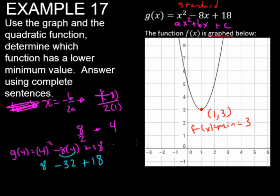I'm sorry, 4 squared is not 8. What was I thinking? 4 squared is 16. That's better. So we have 16 plus 18 is 34, minus 32 gives me 2. So my point is at 4 and 2. So there's my vertex.